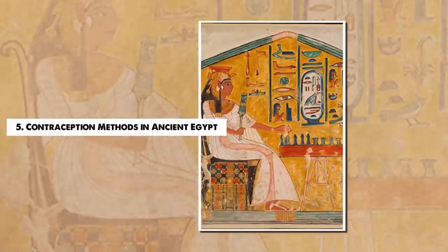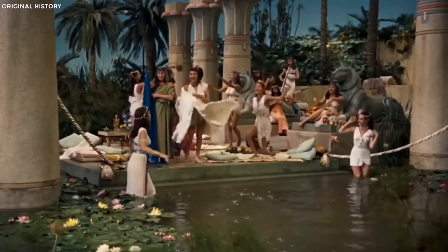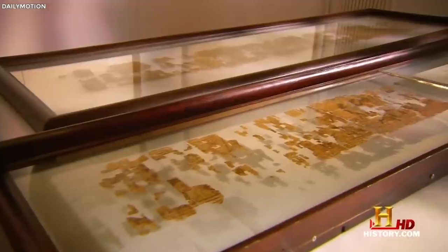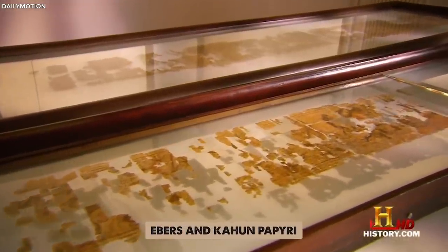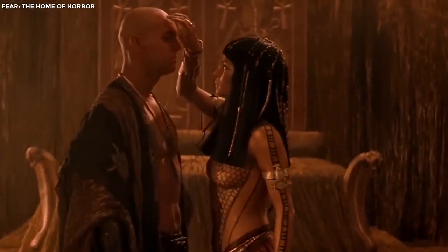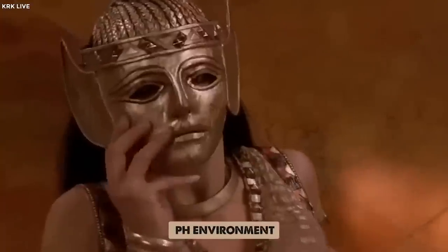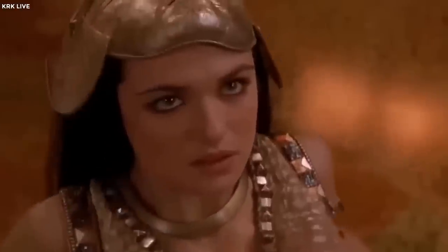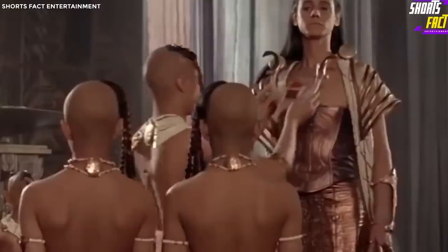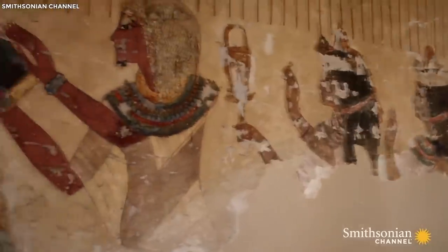5. Contraception Methods in Ancient Egypt. In ancient Egypt, understanding of sexual health was surprisingly sophisticated. The Egyptians had developed numerous contraception methods, as evidenced by various medical texts like the Ebers and Cahoon Papyri. The most commonly used contraceptive was a pessary, a device placed inside the vagina to prevent sperm from reaching the uterus. Made from ingredients like crocodile dung, honey, and acacia gum, these pessaries acted as physical barriers and possibly altered the pH environment of the vagina to be inhospitable for sperm. Another popular method was the use of acacia gum, which when fermented produces lactic acid, an ingredient found in modern spermicides, often combined with dates and honey and inserted into the vagina before intercourse.